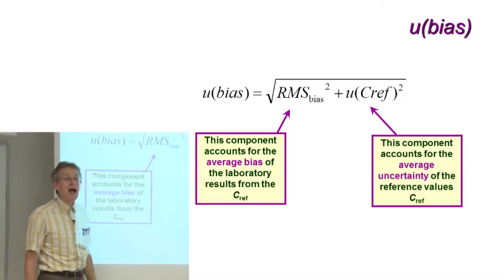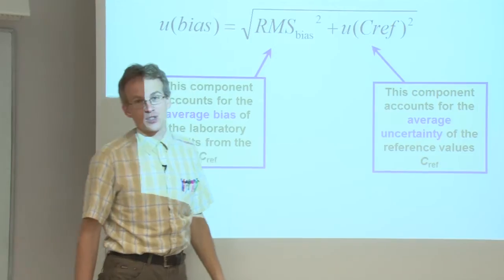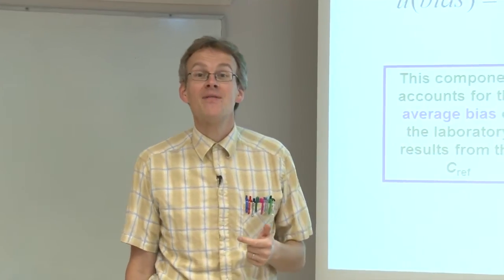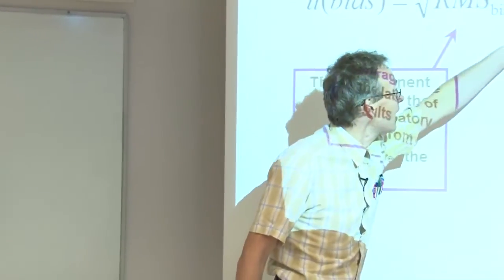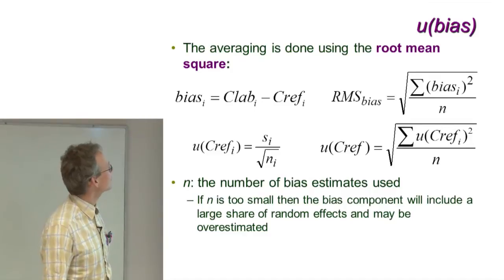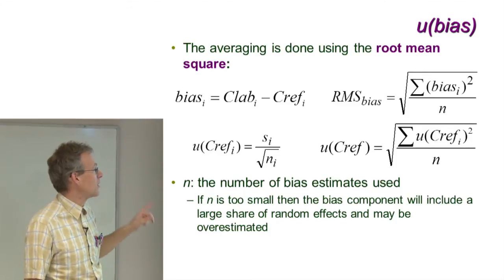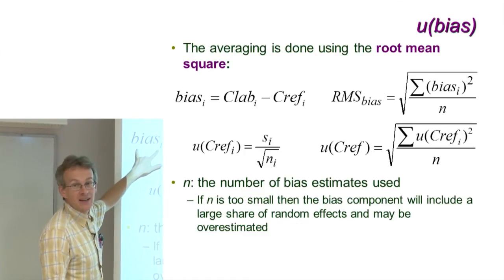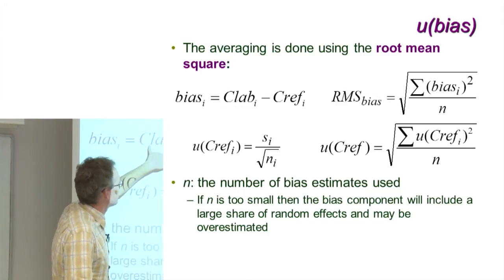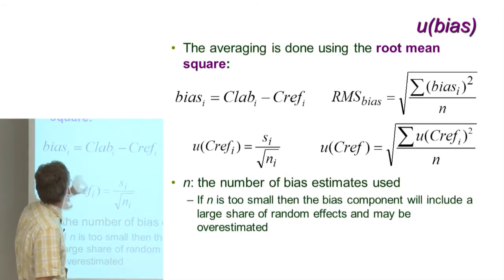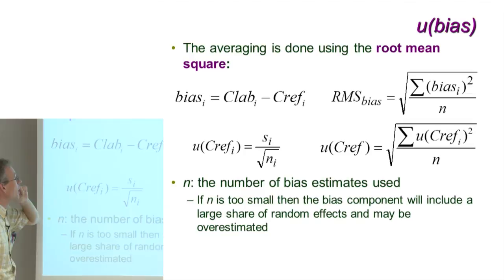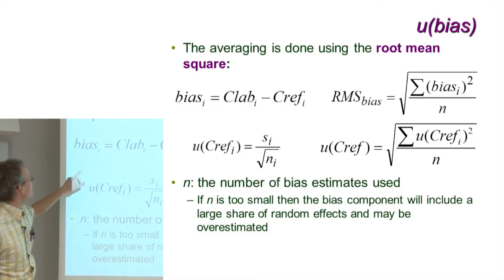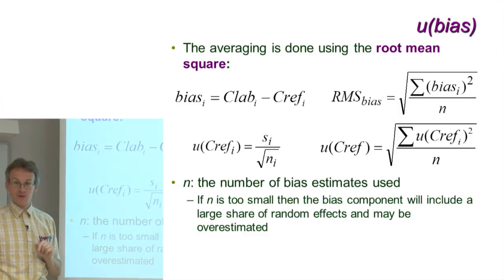The component UC_ref takes into account the average uncertainty of the reference values. As you may remember from earlier lectures, all reference values differ from true values in that they have uncertainties, and these uncertainties are accounted for by this component. Each individual bias value is calculated as the concentration found in your lab minus the reference concentration, whereby C_lab_i should be determined from repeated measurements, so that each of these bias values in turn comes from repeated measurements.